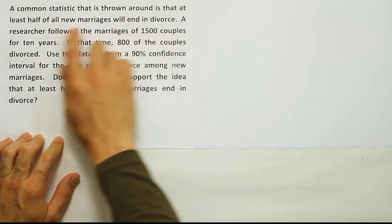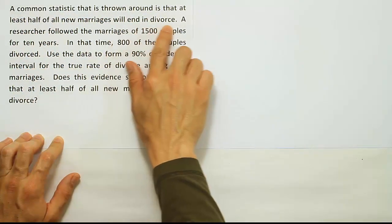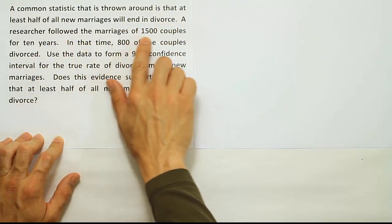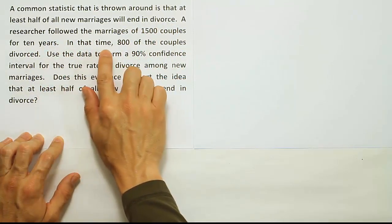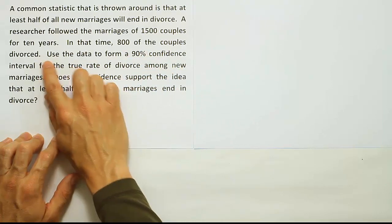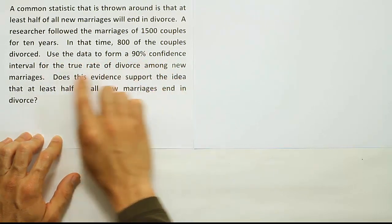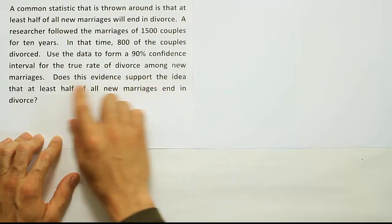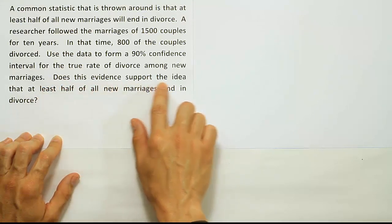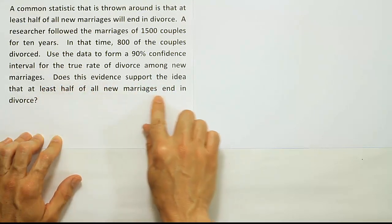A common statistic that is thrown around is that at least half of all new marriages will end in divorce. A researcher followed the marriages of 1,500 couples for 10 years. In that time, 800 of the couples divorced. Use the data to form a 90% confidence interval for the true rate of divorce among new marriages. Does this evidence support the idea that at least half of all new marriages end in divorce?